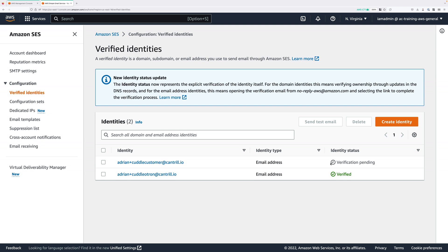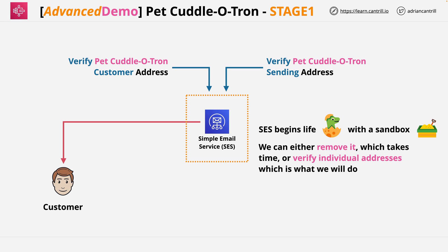Once you've verified both addresses, refresh and click Verified Identities on the left menu — you should see both change to a verified status. That's all you need to do in stage 1. You've successfully added verified identities to the Simple Email Service, which will allow the serverless application to use these addresses to send email. Complete this video, and I'll see you in stage 2 of this mini-project.